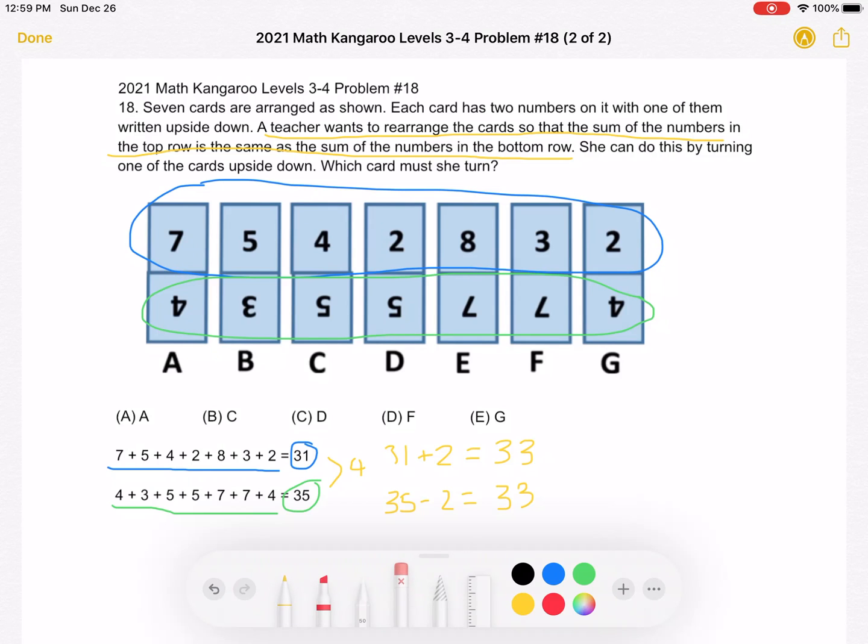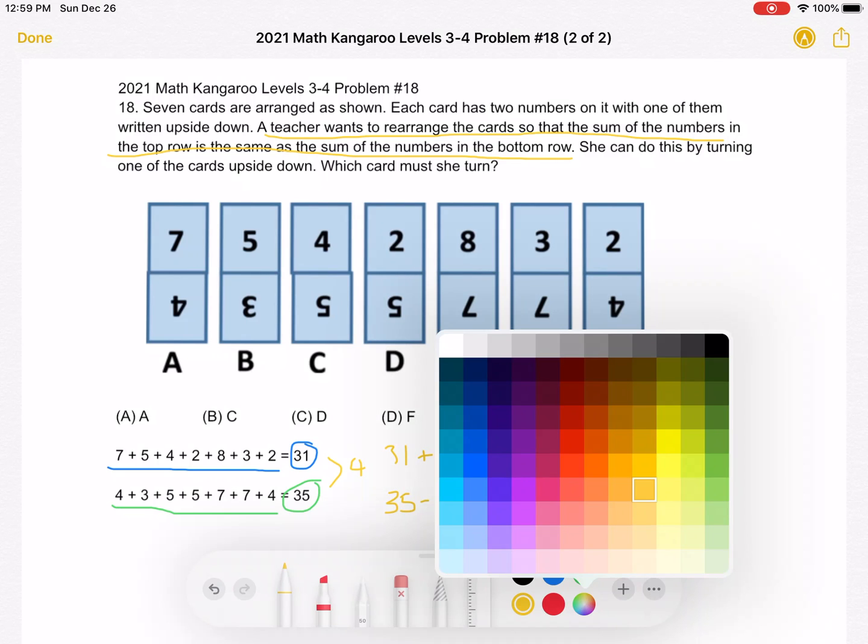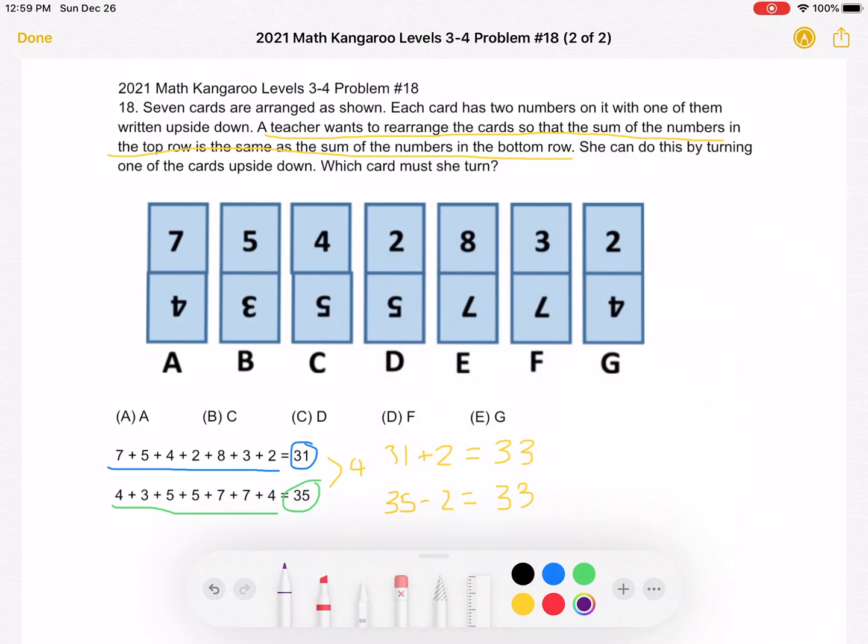So now let's look at our cards to see which ones have the top number and bottom number differ by 2. So here they differ by 3, here they differ by 2, here they differ by 1, here they differ by 3, 1, 4, and 2.